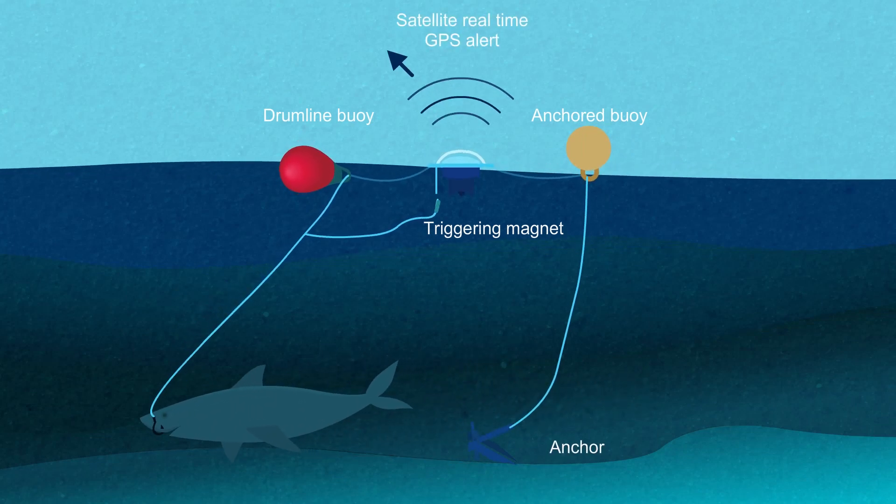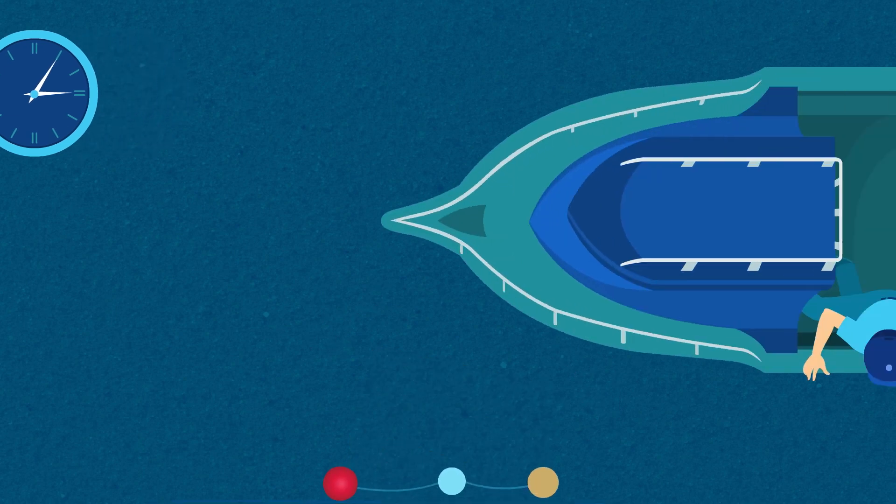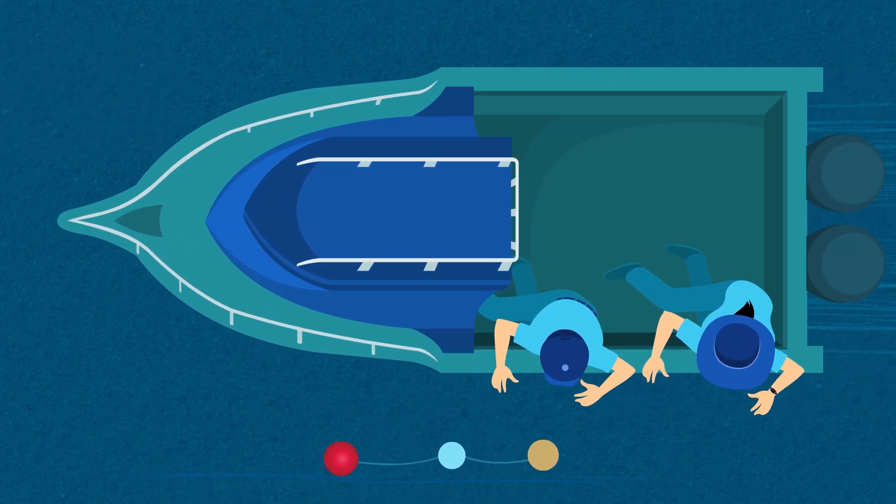When a shark is hooked on a smart drumline, an alert is sent immediately via email, text message and phone call to the Department of Primary Industries, shark scientists and contractors.